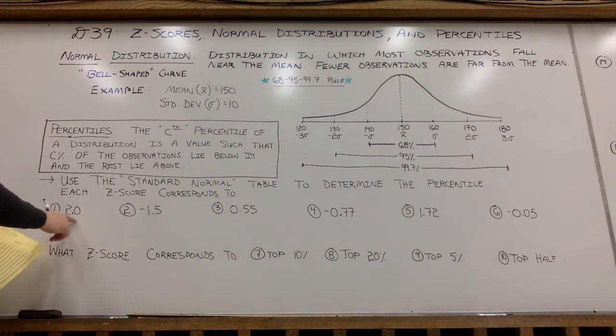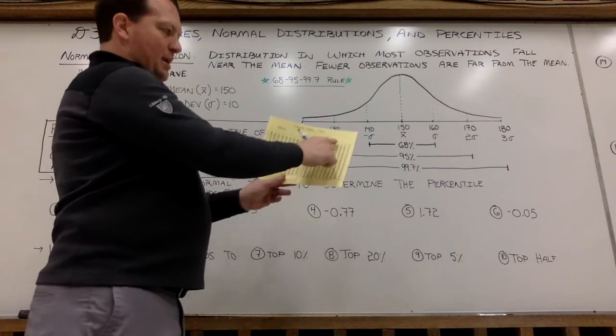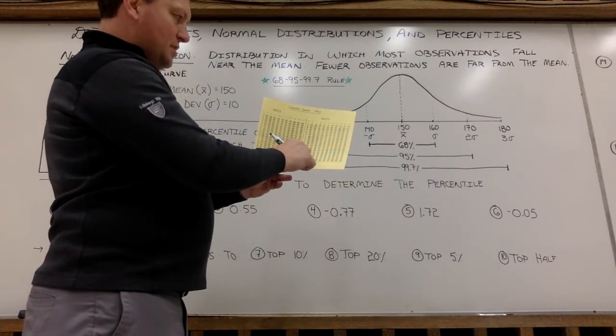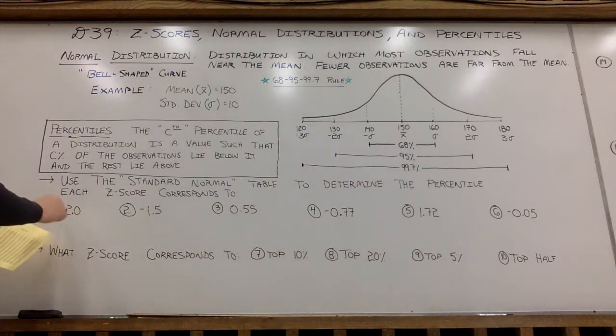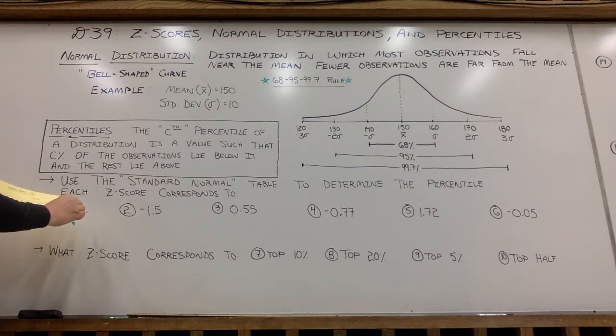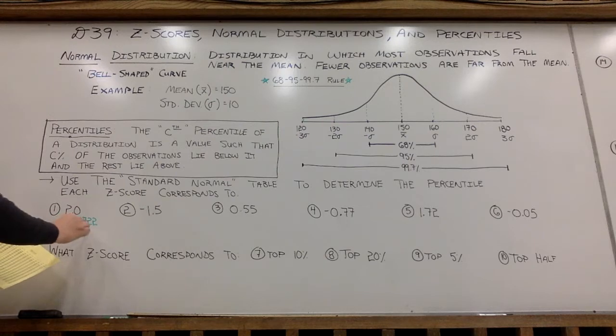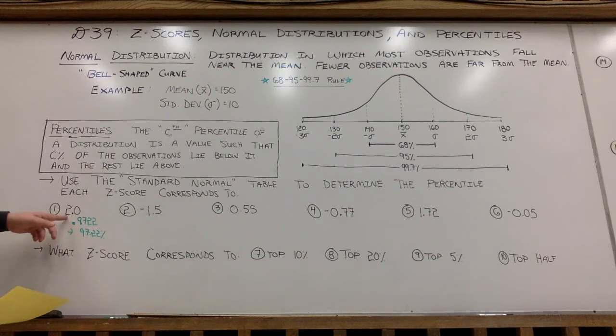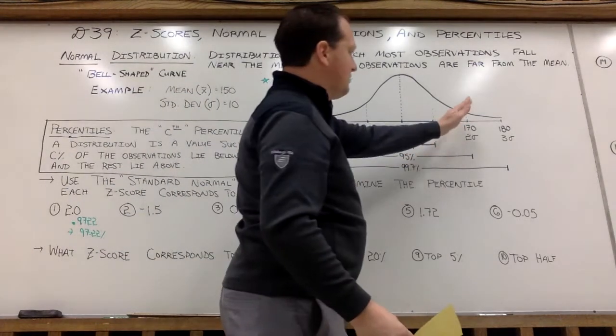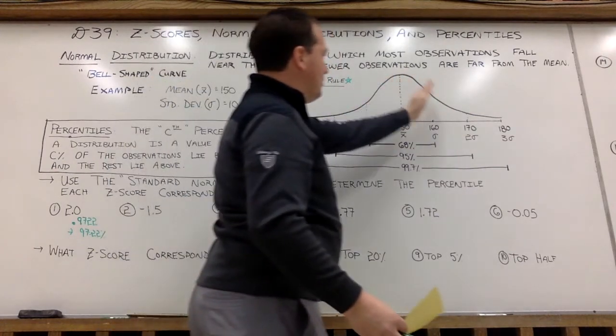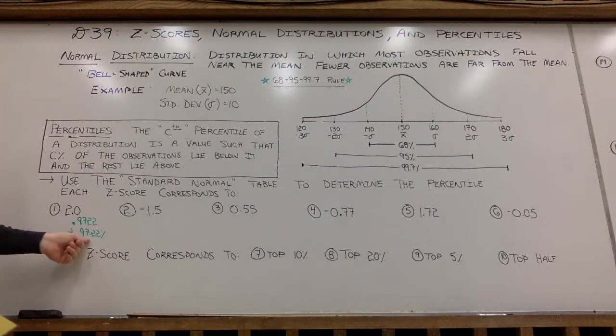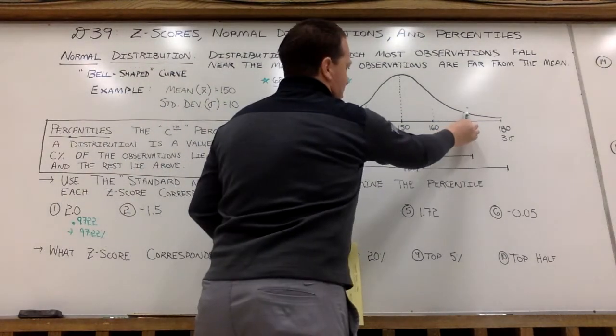So a positive z-score of 2.0, I'm going to go to the positive half and scroll down to 2.00. So what this tells me is positive 2.0 will have a percentile of 0.9722. So making that a percent, I would say 97.22% of all scores would be below a z-score of positive 2. So this whole area here would be 97.22% going all scores below.